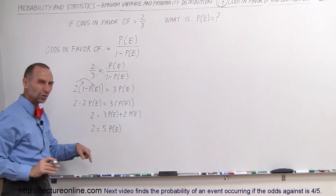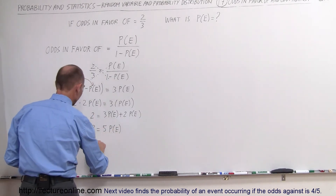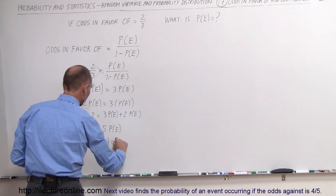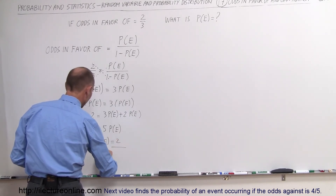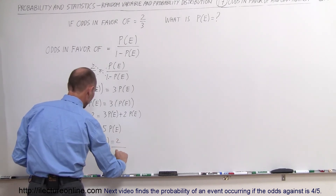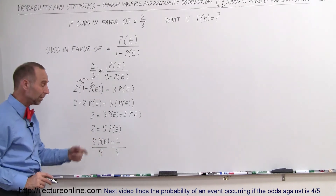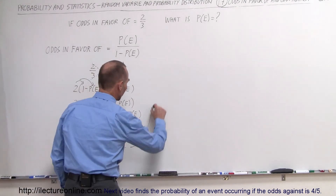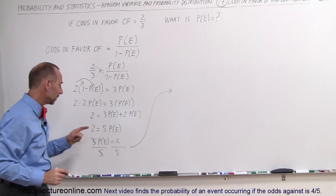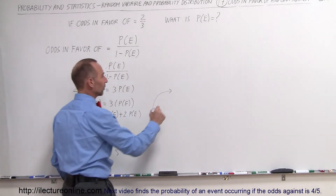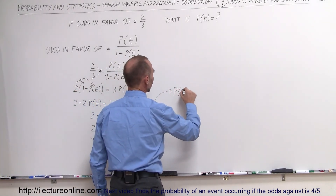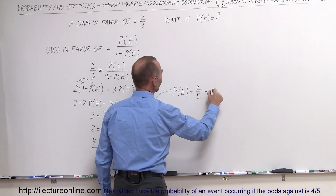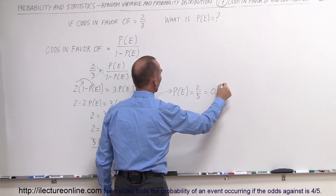Switching the equation around: five times the probability of the event occurring is equal to two. Dividing both sides by five, the probability of the event occurring equals two over five, which in decimals is 0.4.